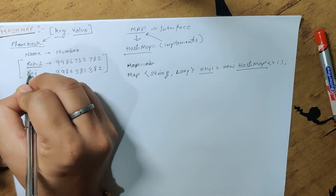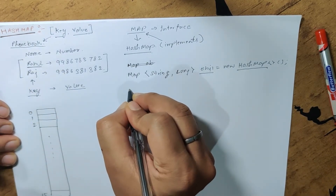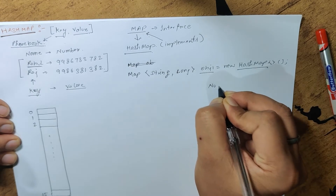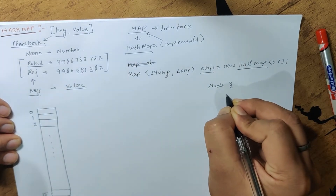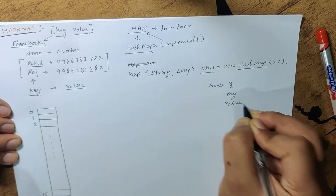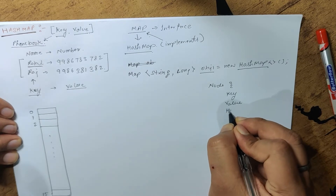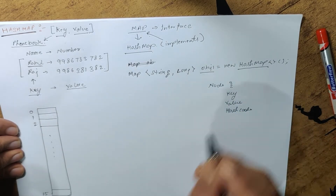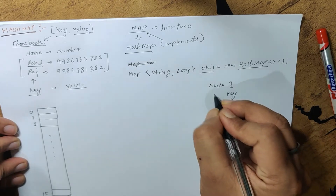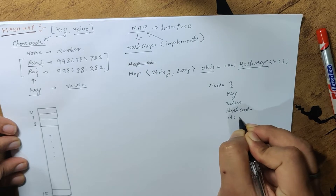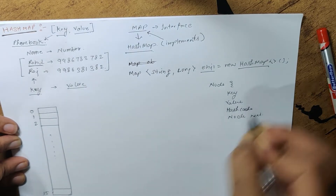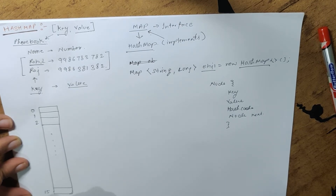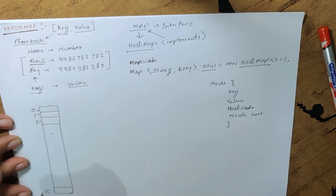To store the key and value, we can assume the structure of each entry will be something like a node. It will have a key, it will have a value, and it will also store the hash code — which I explained in the last video. One more thing it stores is the next node pointer. So the node has: key, value, hash code, and next. This structure is stored in what are called buckets — each index is called a bucket.